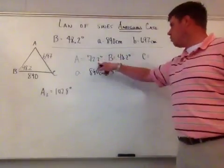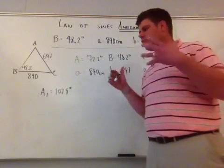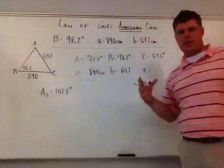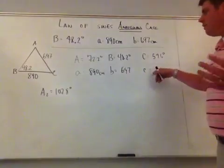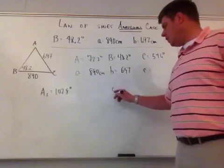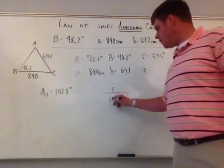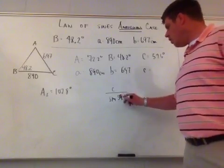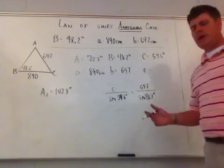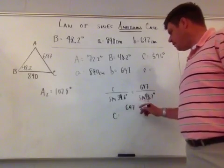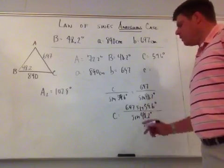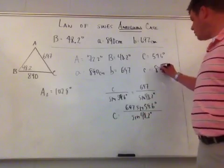Finding angle C for the first triangle: 72.2 plus 48.2 subtracted from 180 gives C equals 59.6 degrees. To find side c, using the given information: c divided by sine of 59.6 degrees equals 697 divided by sine of 48.2 degrees. So c equals 697 times sine of 59.6 degrees divided by sine of 48.2 degrees, which gives c equals 806 centimeters.